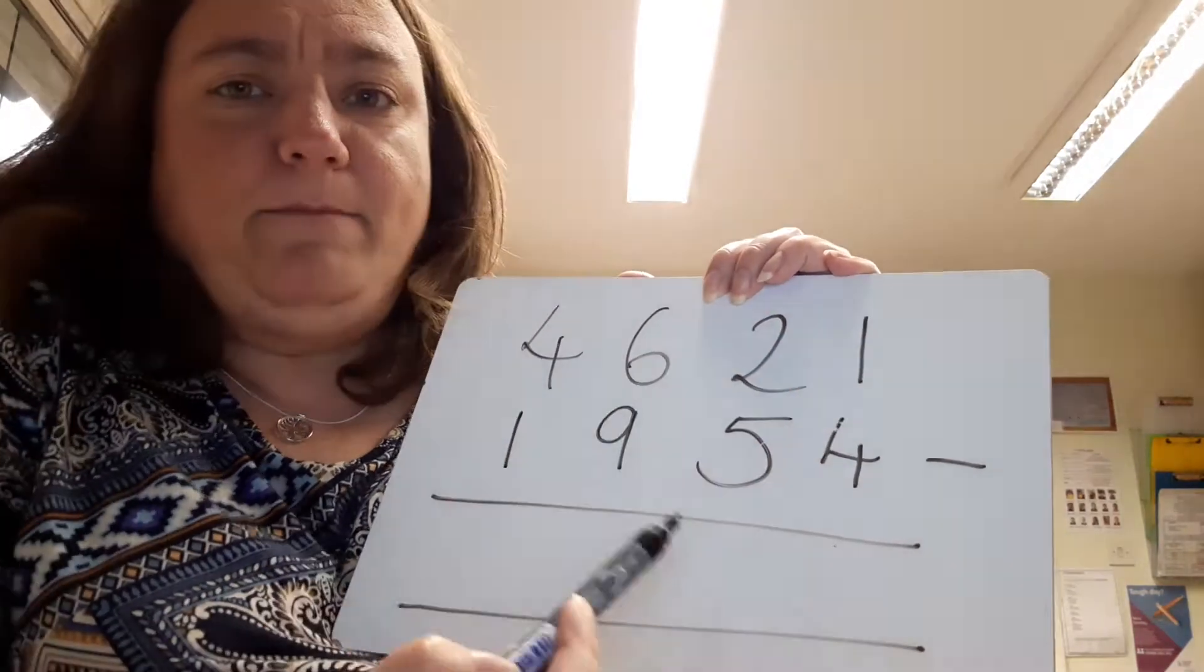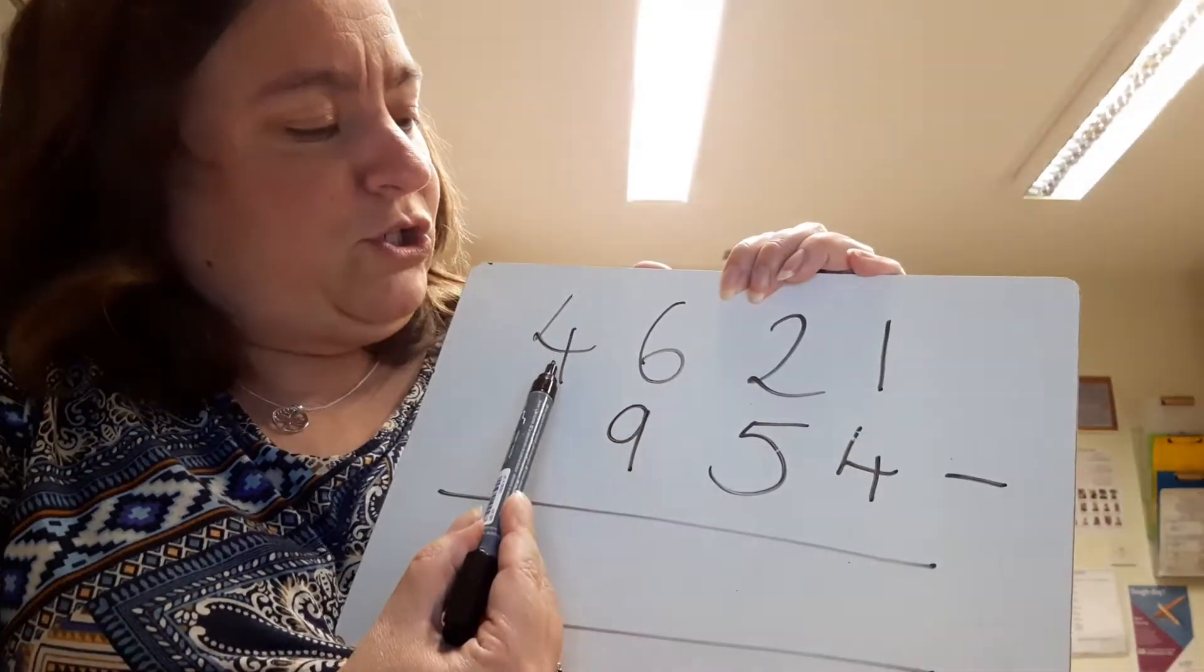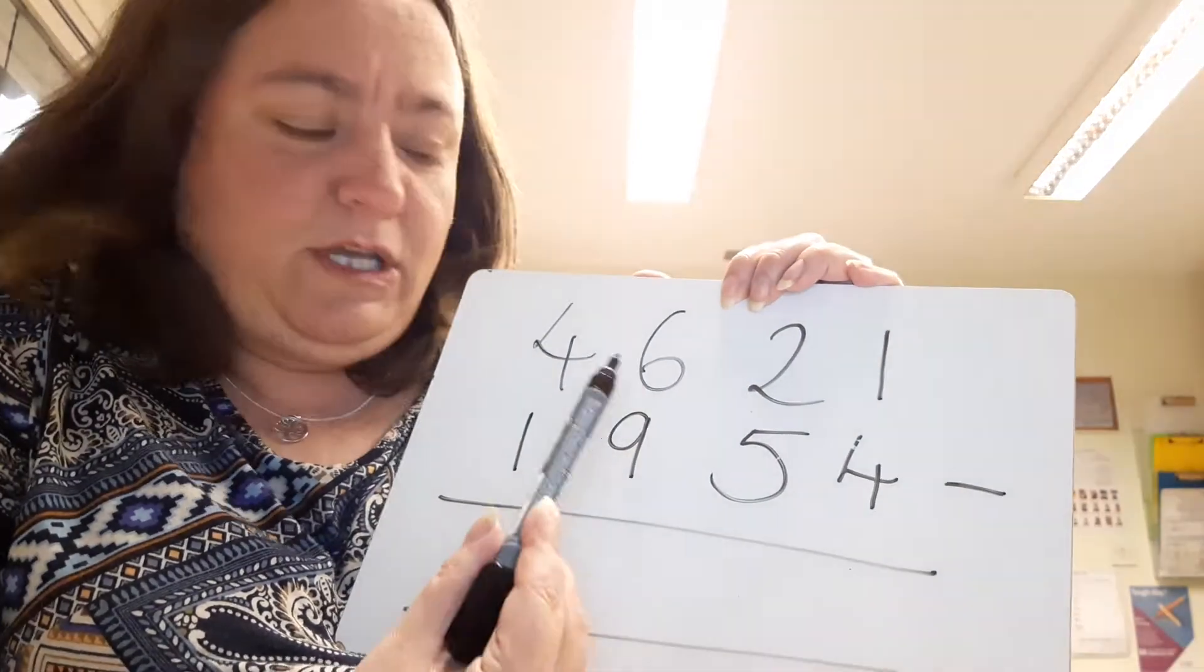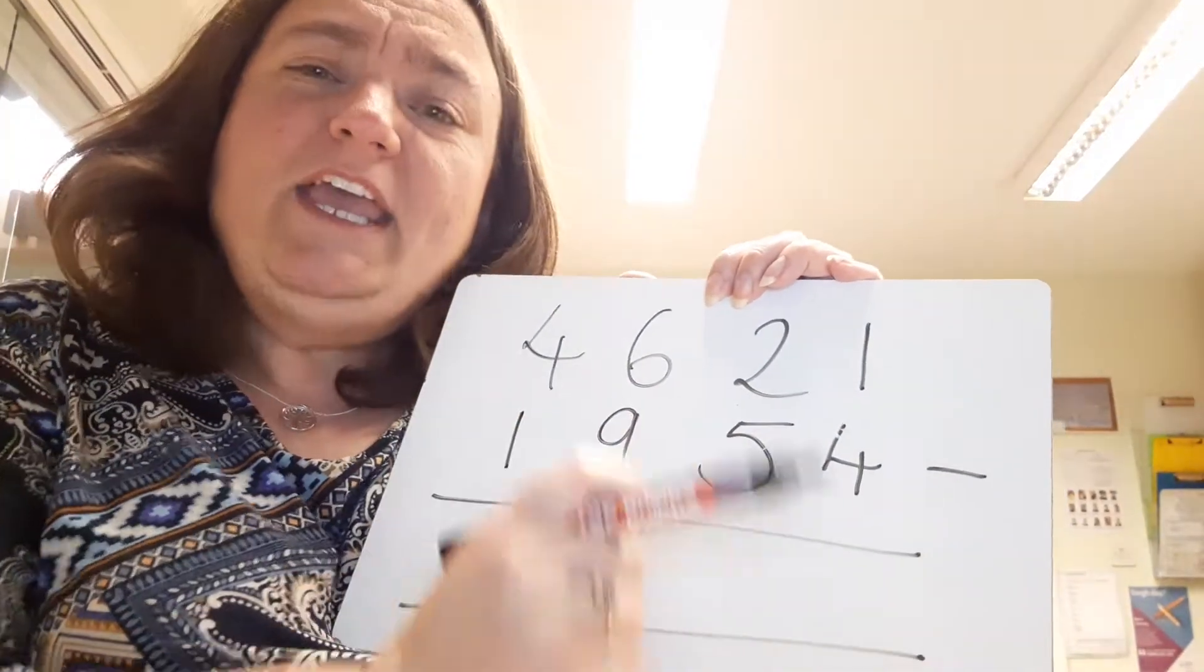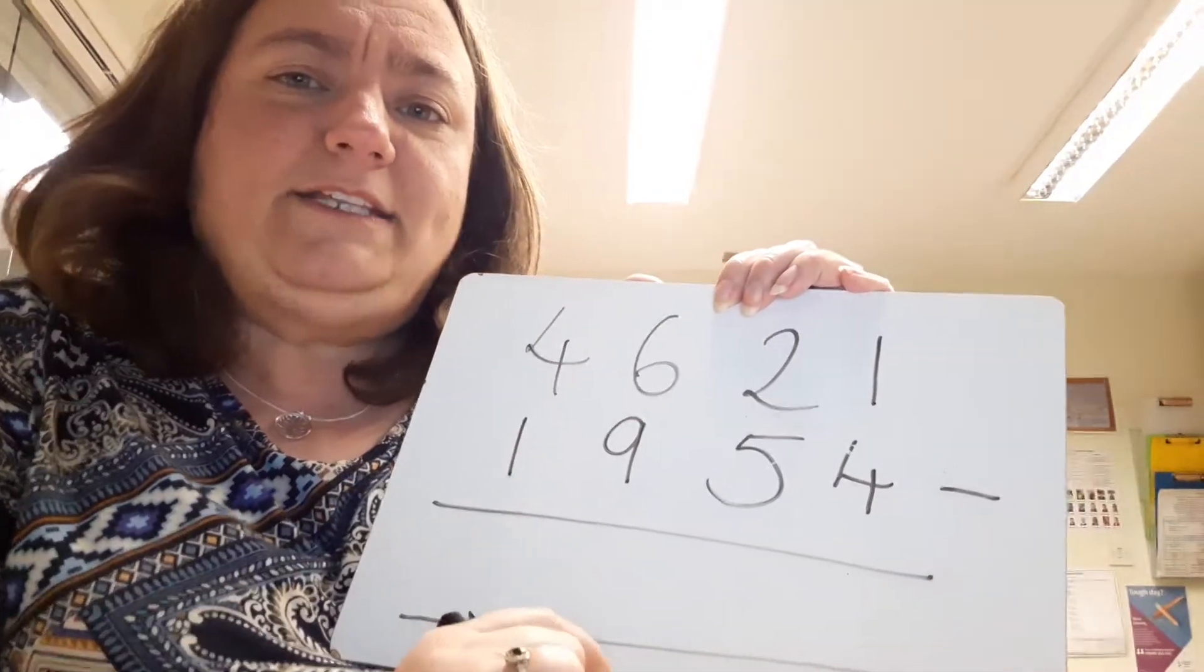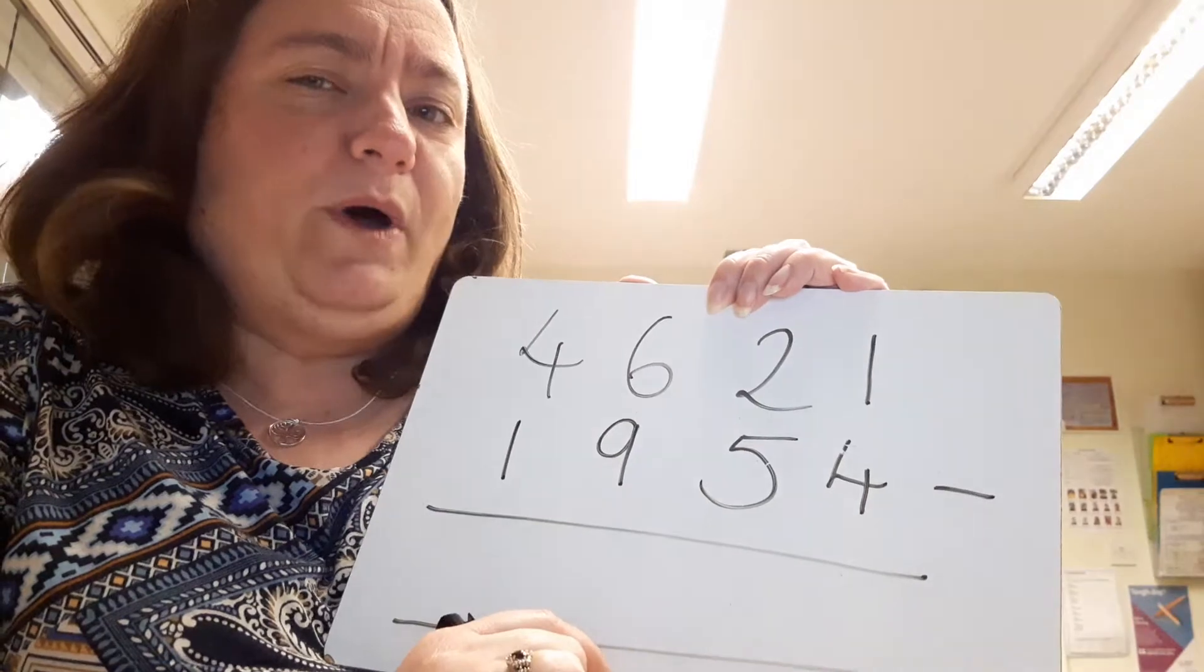you have got the biggest number at the top. My number at the top is 4,000 and my number at the bottom is 1,000, so this is the biggest number, so that's okay. If you have the smallest number at the top, you'll get some problems when you get to taking away our thousands and it won't quite work for you.